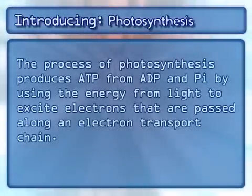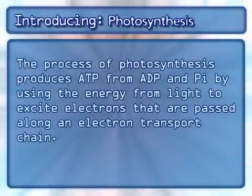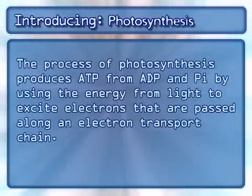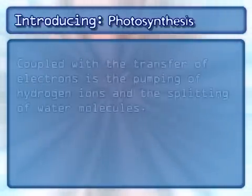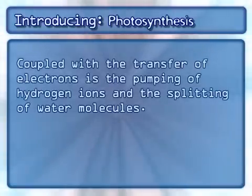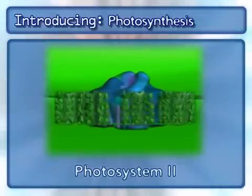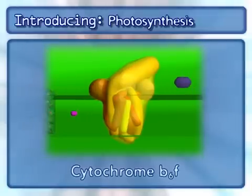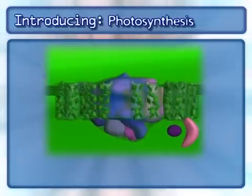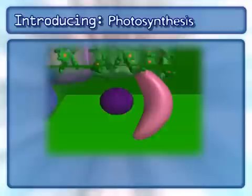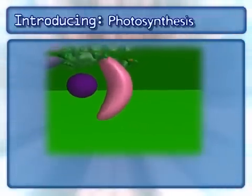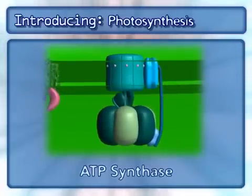The process of photosynthesis produces ATP from ADP and PI by using the energy from light to excite electrons that are passed along an electron transport chain. Coupled with the transfer of electrons is the pumping of hydrogen ions and the splitting of water molecules. The following complexes are found in the photosynthesis electron transport chain: Photosystem II, cytochrome B6F, photosystem I, ferredoxin NADP reductase, and the complex that makes ATP, ATP synthase.